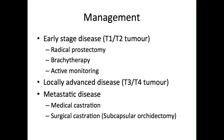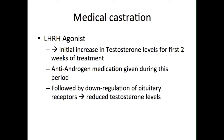This can be achieved either via medical castration or surgical castration. Medical castration involves the use of LHRH agonists, such as goserelin, which initially cause an increase in testosterone levels. However, after two weeks of treatment, there is downregulation of pituitary receptors, leading to a reduction in testosterone levels, and therefore theoretically a decrease in the size of the prostate tumour.